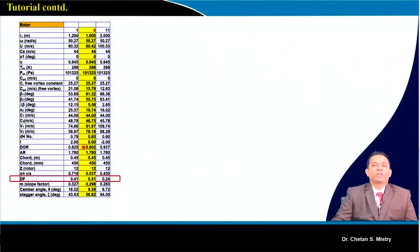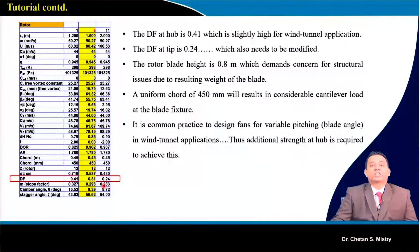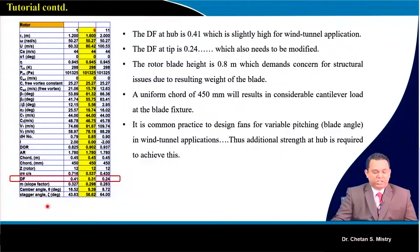We performed calculations at the hub and tip stations using a free vortex design approach and arrived at these numbers. The diffusion factor at the hub is 0.41 and at the tip it is 0.24. For a compressor we would expect the diffusion factor to be in the range of 0.5 to 0.6, but since this is a fan we are not targeting such high diffusion factors near the hub region.